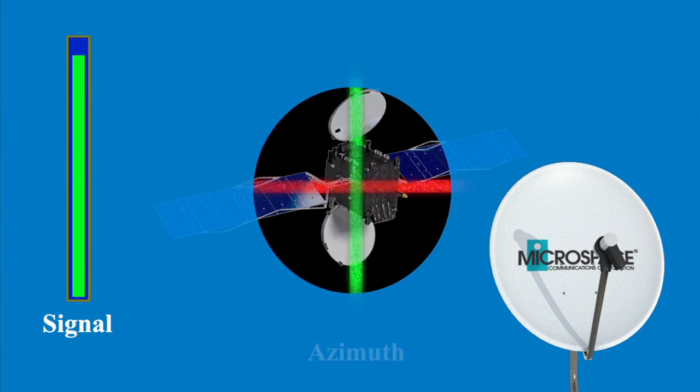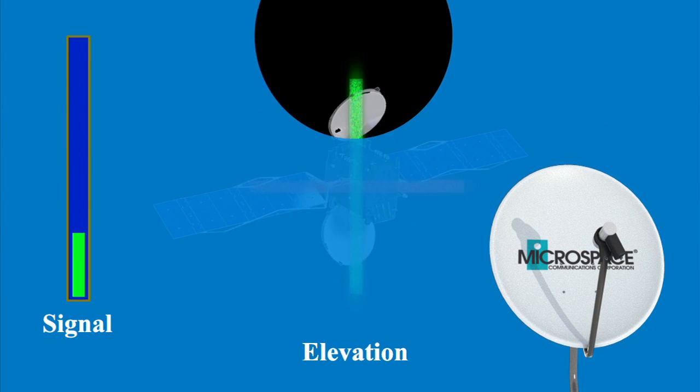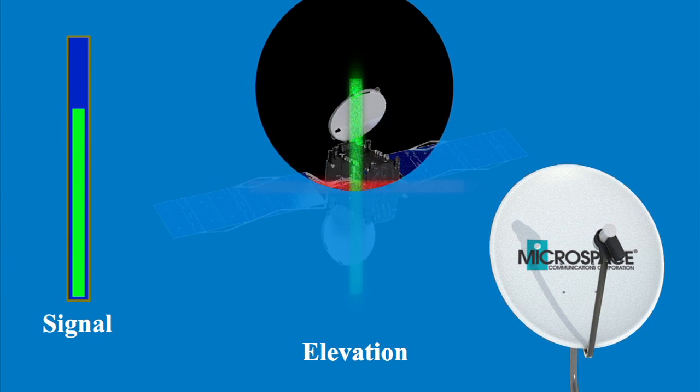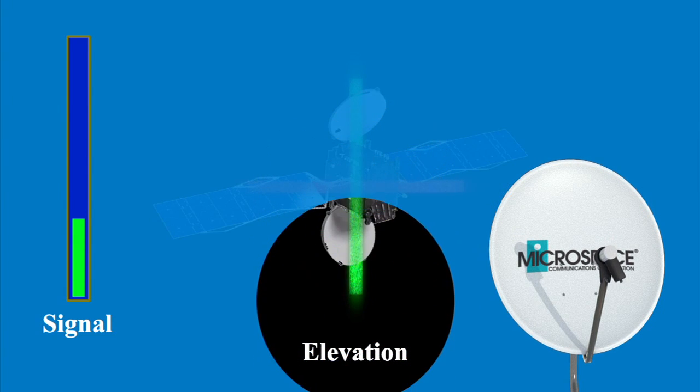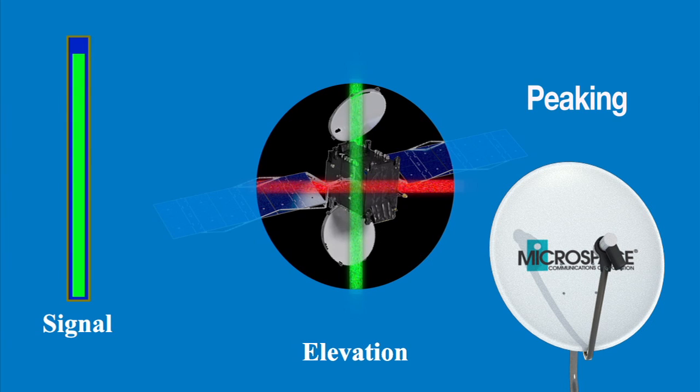The second adjustment is called elevation, the up-and-down movement. Once a signal is received from the satellite, azimuth and elevation are adjusted for maximum signal strength. This is called peaking the dish.